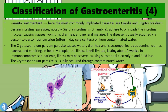Now let's talk about parasitic gastroenteritis. The most commonly implicated parasites are Giardia and Cryptosporidium. Certain intestinal parasites — notably Giardia intestinalis, also commonly known as Giardia lamblia — adhere to or invade the intestinal mucosa, causing nausea, vomiting, diarrhea, and general malaise. The disease is usually acquired by person-to-person transmission, often in daycare centers or from contaminated water.